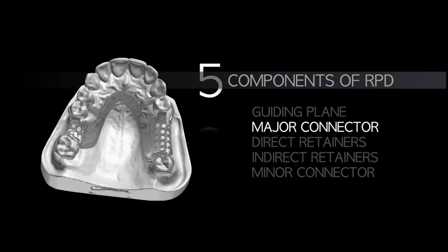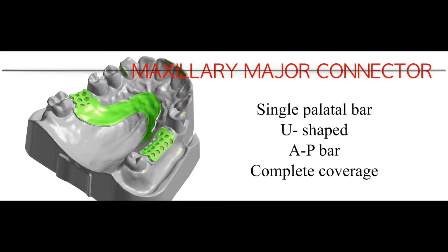You need to prepare the guiding plane on all four teeth. That's the first component. The second component is the major connector—the element that connects the whole prosthesis together, providing structural integrity and rigidity.